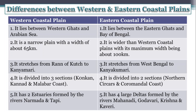Fourth: Western Coastal Plain is divided into three sections — the Konkan, Kannad, and Malabar Coast. Eastern Coastal Plain is divided into two sections — the Northern Sarkar and Coromandel Coast.